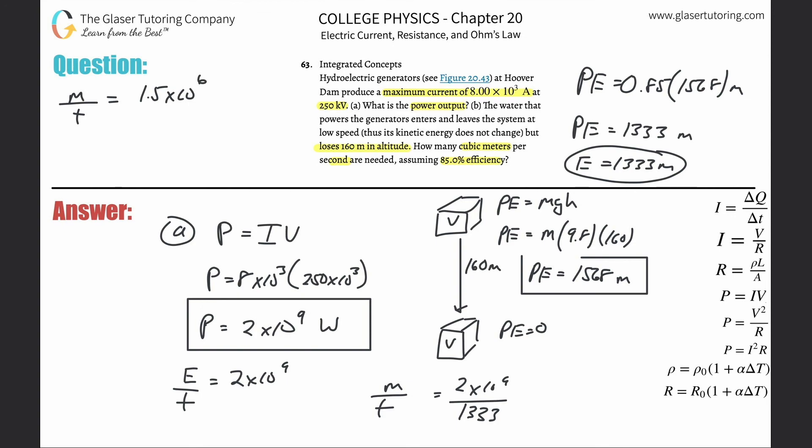We need to use density. The density of water equals mass divided by volume. So the mass will be equal to the density multiplied by the volume. What I'm going to do is plug this in, and now I have density times volume all divided by time, which equals 1.5×10⁶.